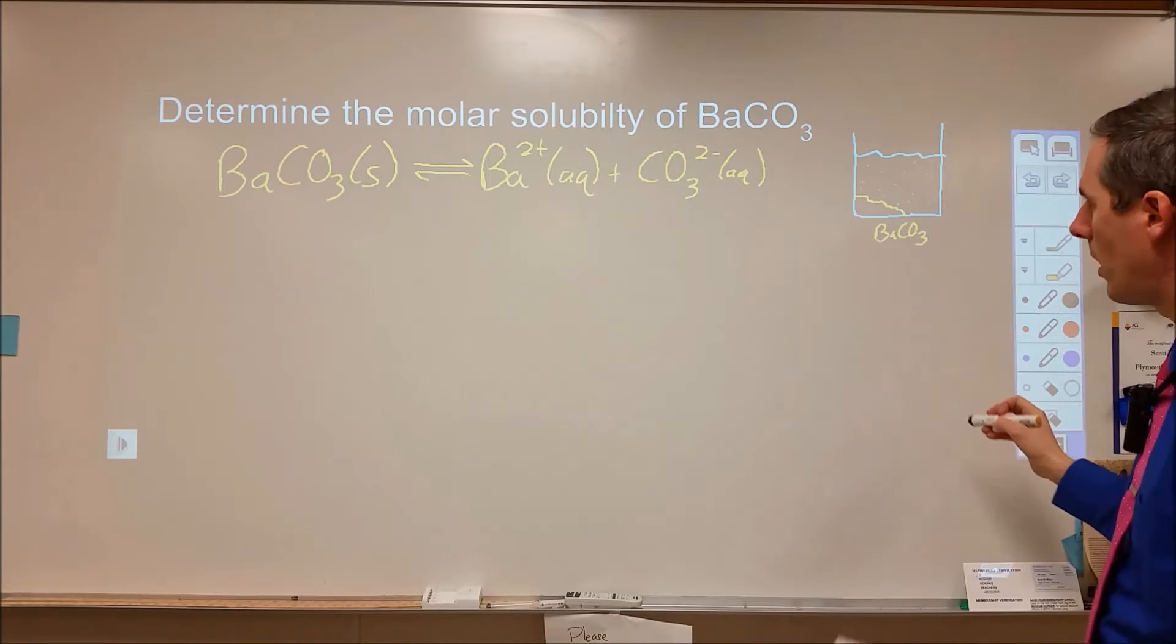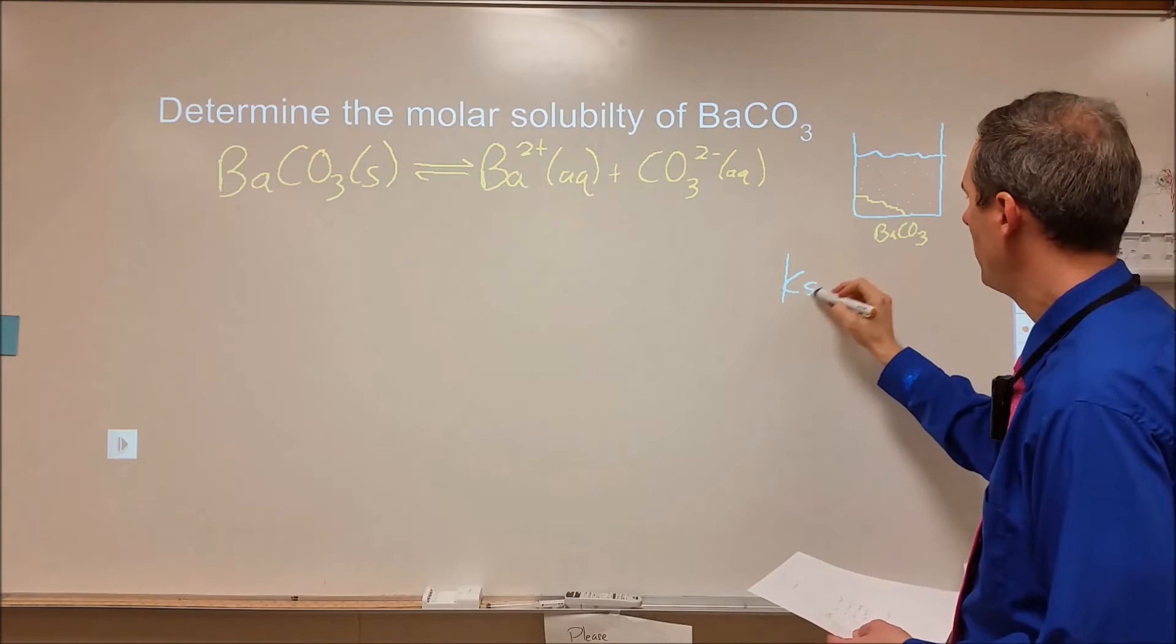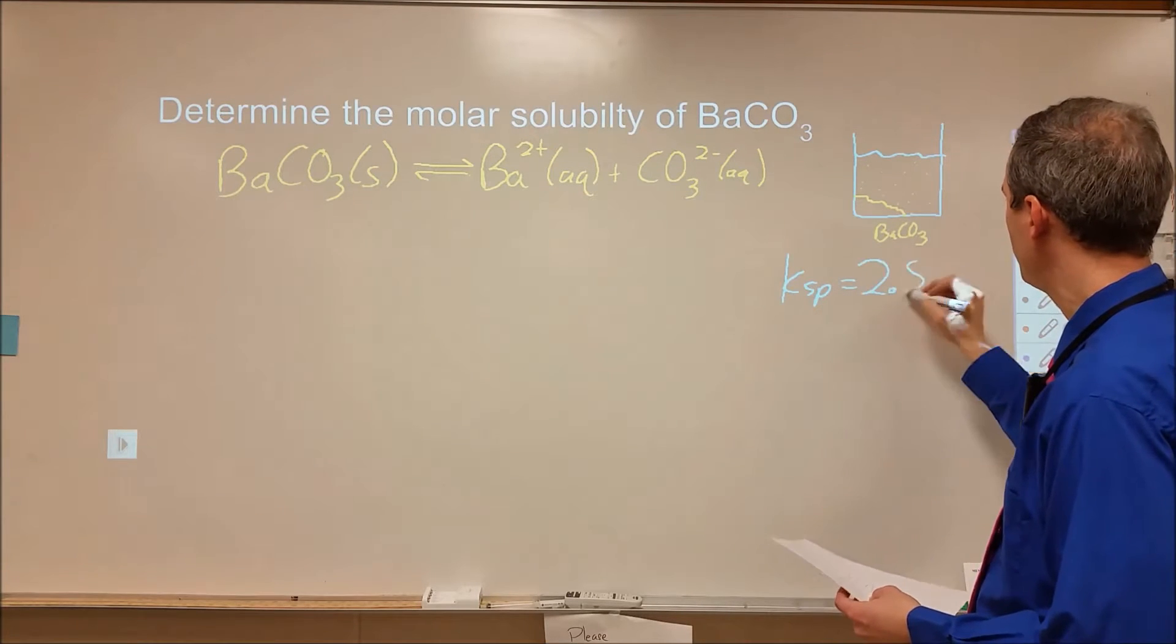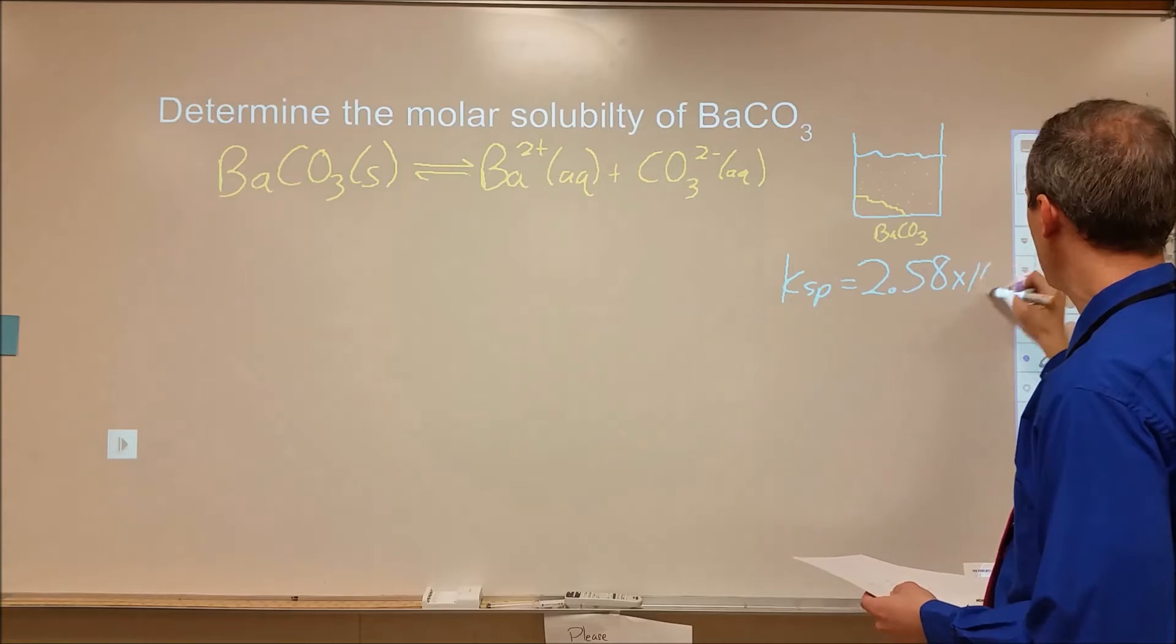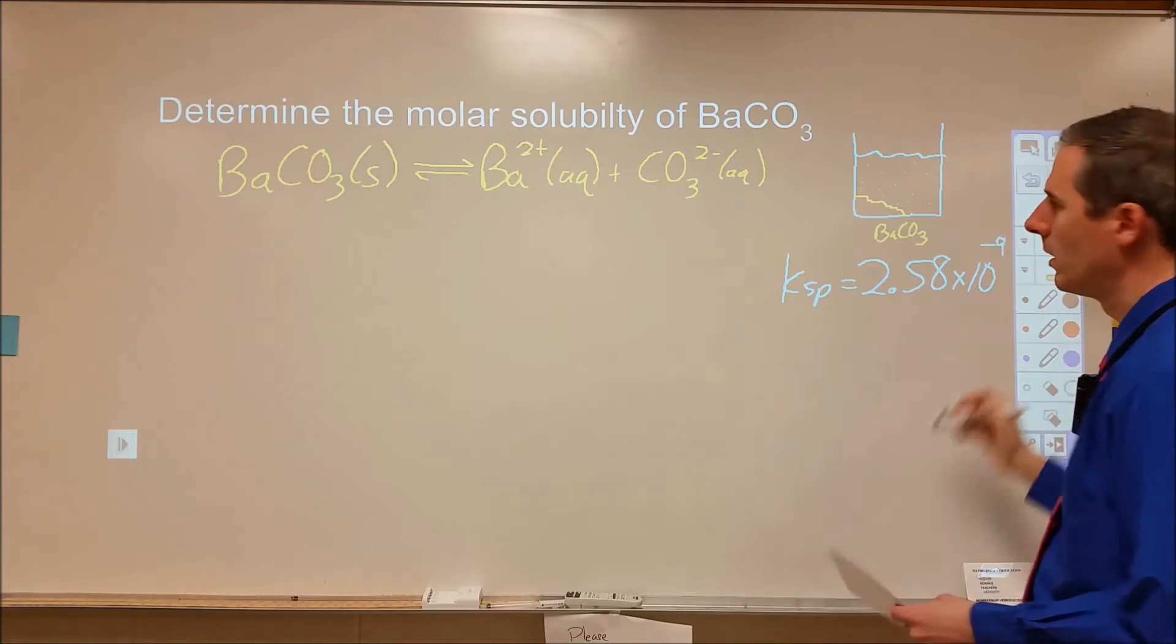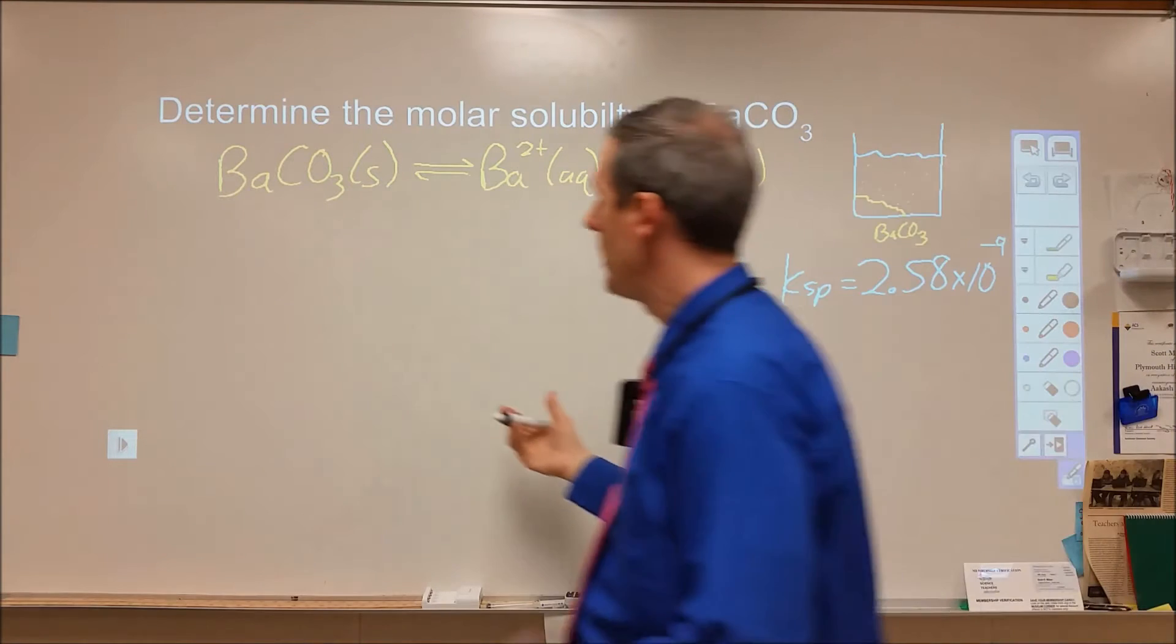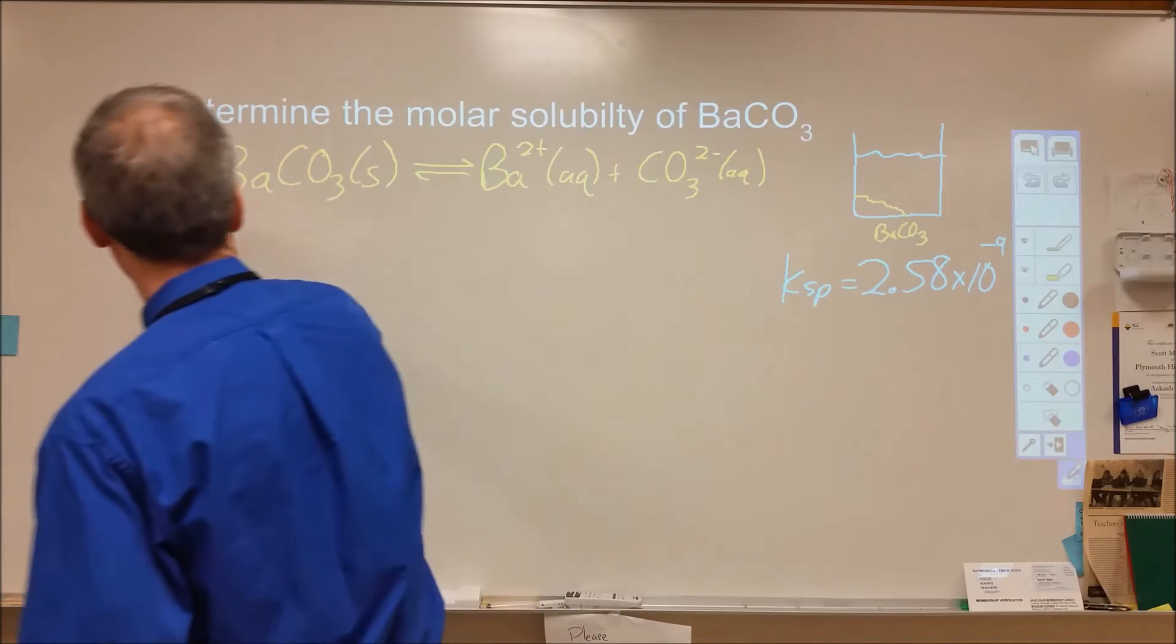For that, we have to look up the KSP value. When we go to our chart for KSP in the IB data booklet, the KSP for this is 2.58 times 10 to the negative 9, and that's our equilibrium constant. Now we want to set up an ICE chart.